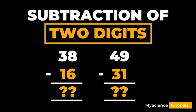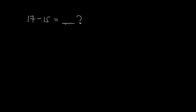Hello and welcome to my science tutorials. In today's video I want to look at subtraction of two-digit numbers. I want to first start by looking at a very simple example: 17 minus 15. What is going to be our answer?